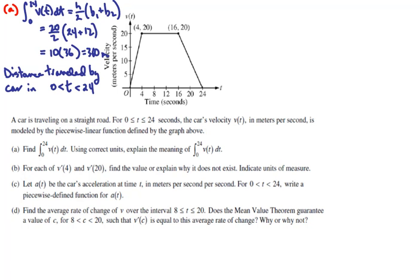For part b, we want to find v'(4) and v'(20). v'(4) will be the slope of the velocity curve when t is equal to 4. And obviously, you see there is a sharp turn, so that will not exist. Now, you can say that it's a sharp turn. Technically, the way we talk about differentiability at a point is to use the following.